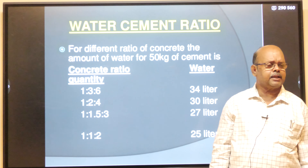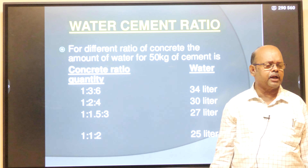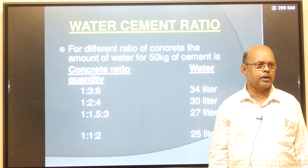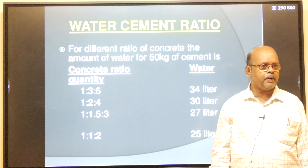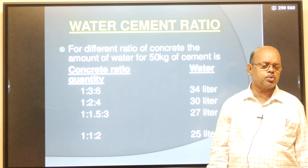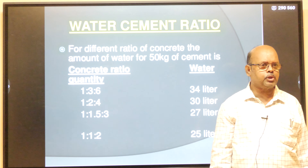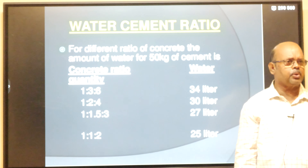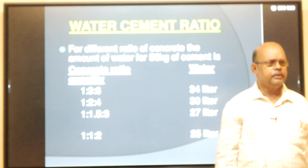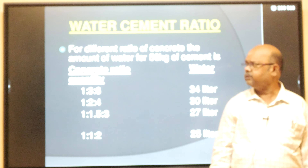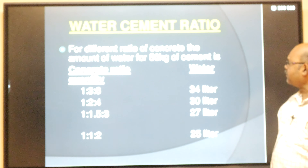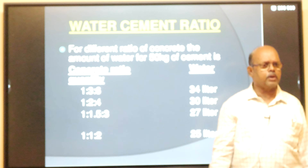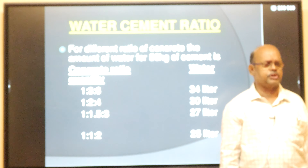For 1:3:6 concrete, we need 34 litres of water; for 1:2:4 concrete, 30 litres; for 1:1.5:3, 27 litres; and for 1:1:2, 25 litres. These are the different mix ratios of concrete and the amount of water to be added per 50 kg of cement. We should not add excess water under any situation.